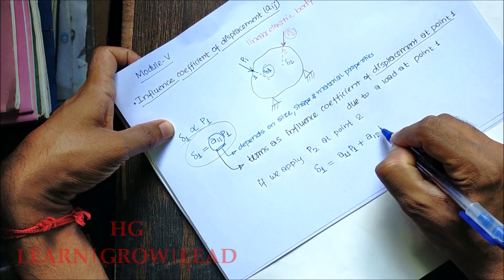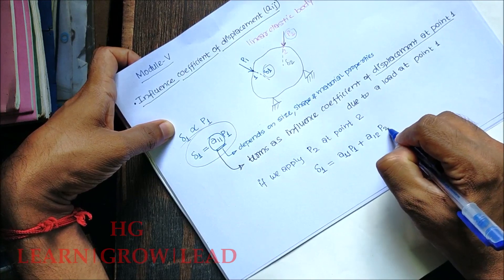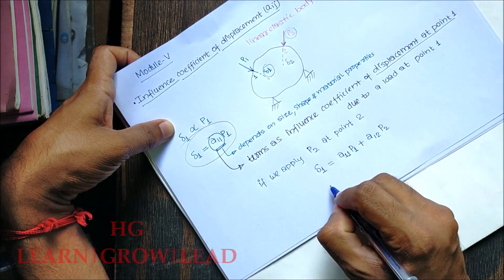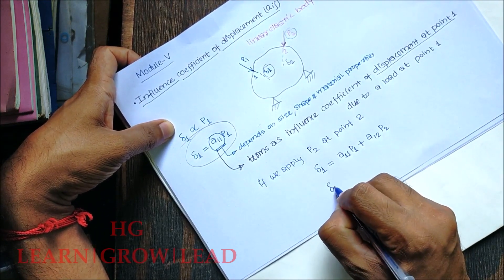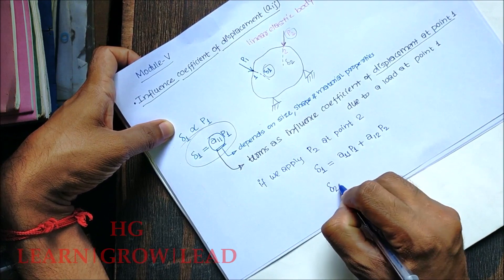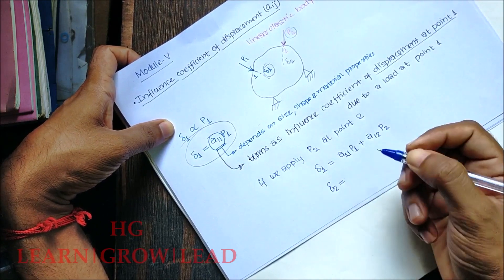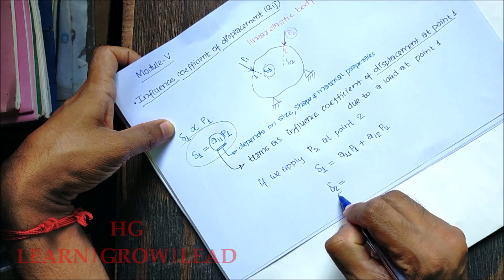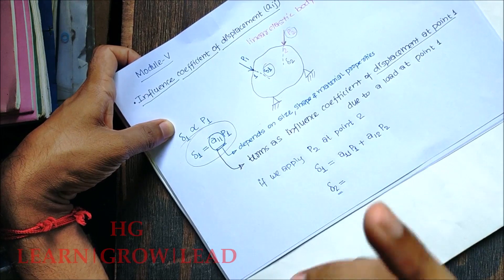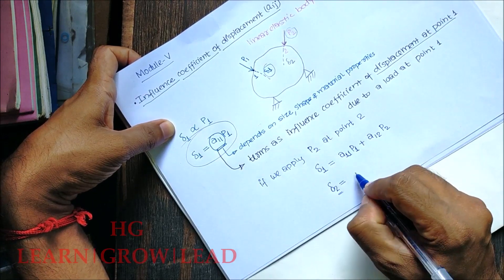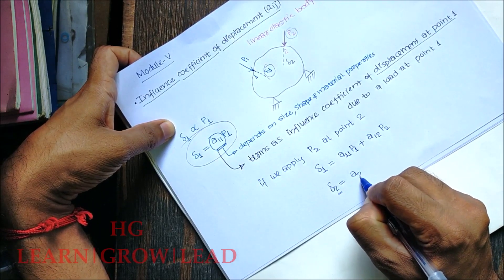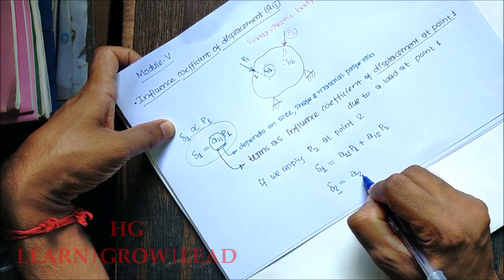Similarly, delta2 equals A22 times P2. For the second point, A2J represents the influence coefficient of displacement at point 2 due to a load at the corresponding point.